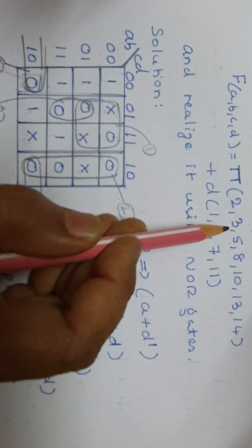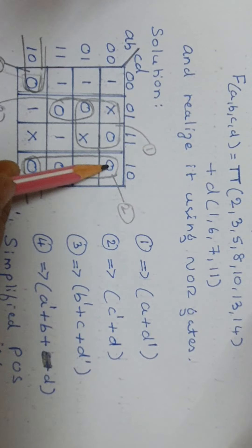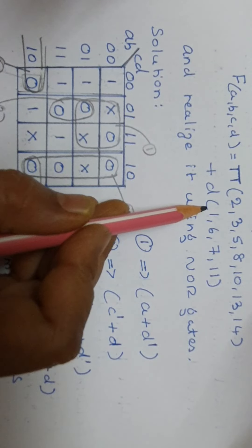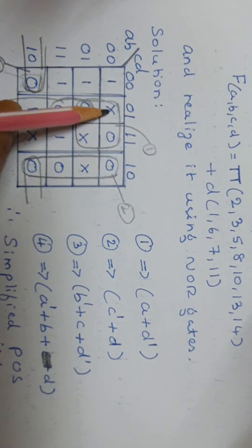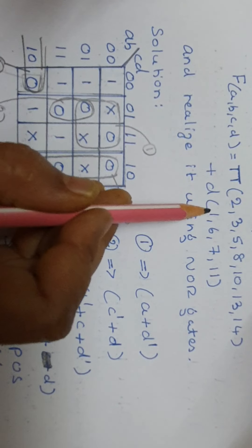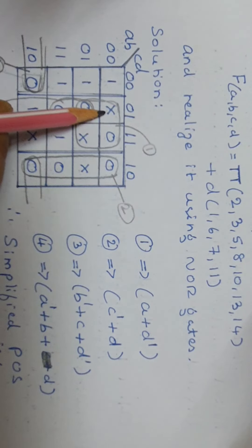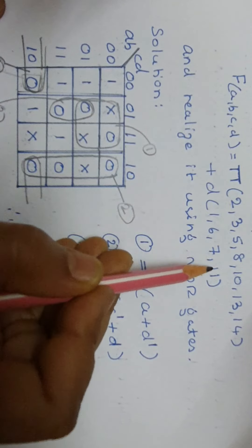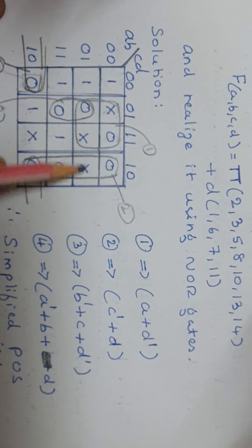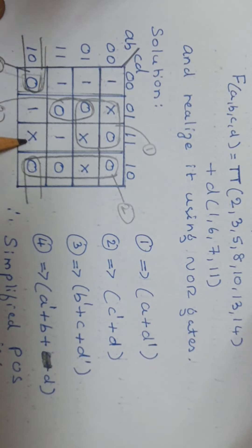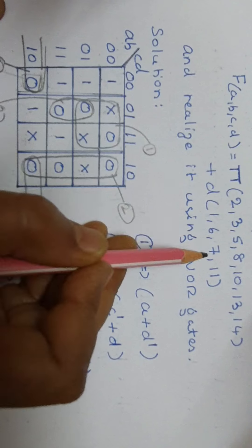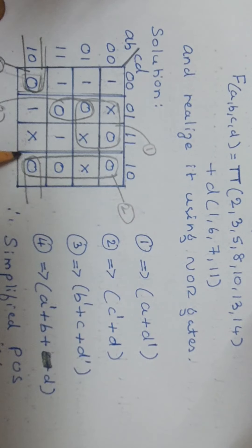Wherever the max terms are present, we fill 0. Then wherever don't care conditions are present — positions 1, 6, 7, and 11 — we fill a cross mark. So positions 6 and 7 get cross marks, and position 11 also gets a cross mark. In positions 1, 6, 7, and 11, don't care conditions are filled.